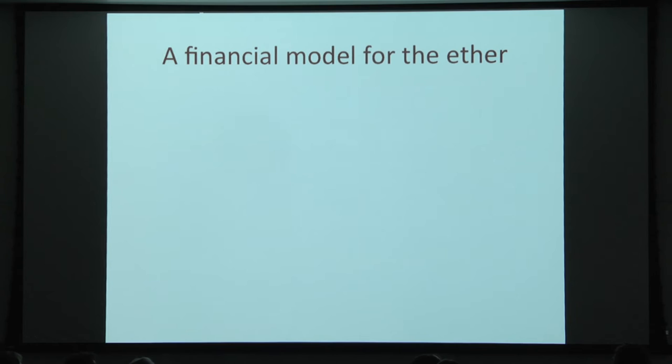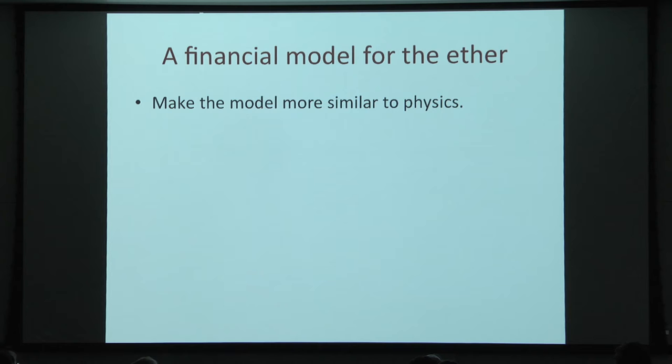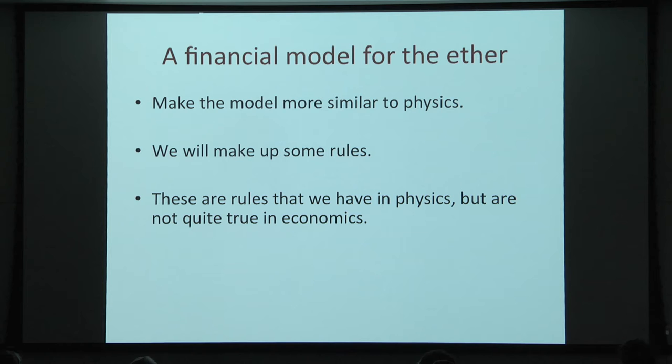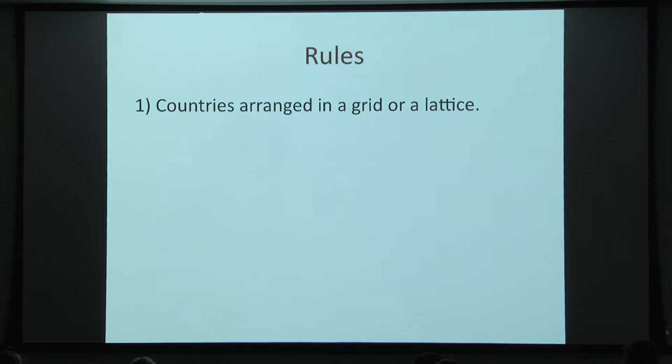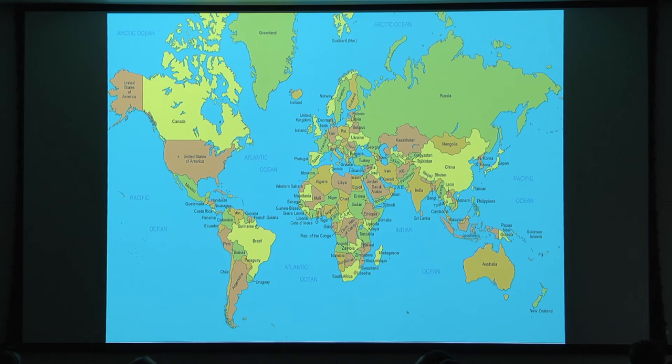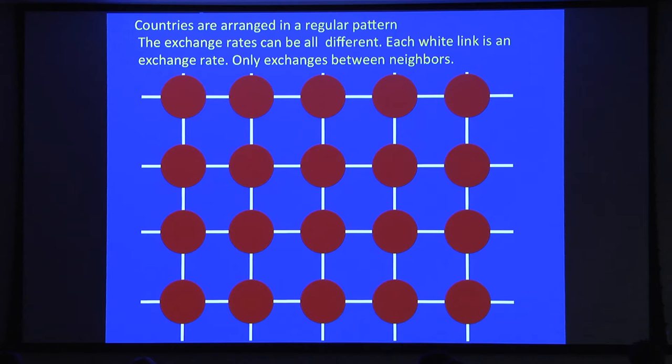I'll now discuss a financial model for the ether, making the model more similar to physics. So far I've discussed some similarities, but now we'll make up rules that we have in physics but are not quite true in economics. The rules are very simple, and this is one of the main reasons that physics is simpler than economics. The rule is that countries will be arranged in a grid or a lattice.